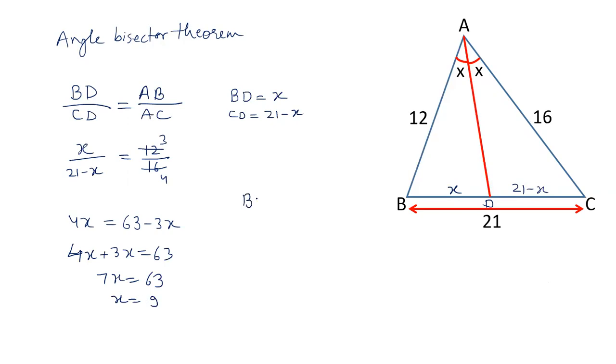So, we are getting the length of BD as 9 cm and therefore, the length of CD will be 21 minus 9, that is 12 cm. And the ratio of 9 and 12 is same as 12 and 16.